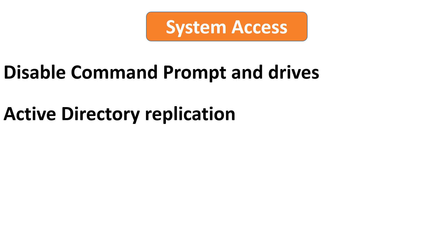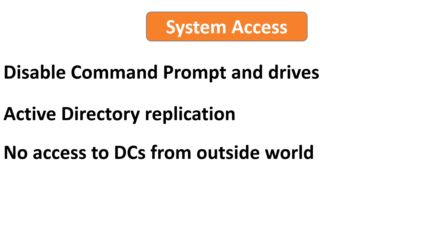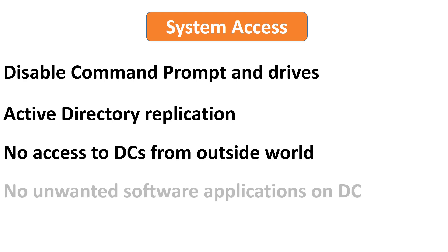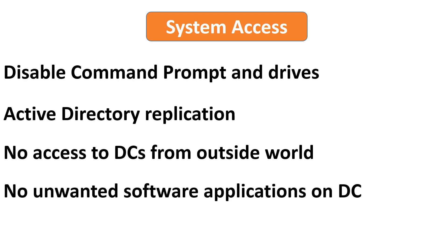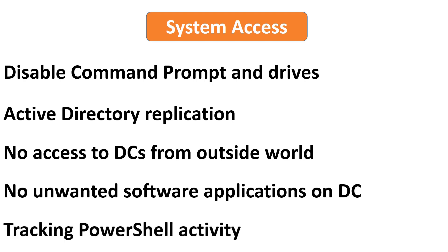Make sure that Active Directory replication is happening and that any inconsistencies in the replication processes are identified and resolved. Check and verify that the Active Directory server cannot be accessed over the internet. Ensure that no unwanted applications are installed on the domain controller. Windows PowerShell is widely used to manage critical Windows Server resources such as users, groups, GPOs, and files. Hence, ensure PowerShell logging is performed using logging with transcript or by enabling module logging.